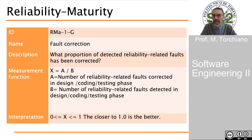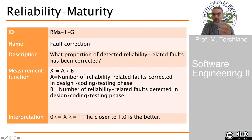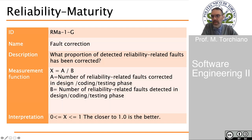Another example in terms of reliability and maturity is fault correction: what proportion of detected reliability faults have been corrected? This is an external measure because we have to observe the system while working to understand if faults have been corrected. It is the ratio between the number of reliability faults corrected and the number of reliability faults detected — requiring observation of the system, counting detected faults, and after a while counting faults that have been corrected. Again, the value ranges from 0 to 1, with closer to 1 being better.